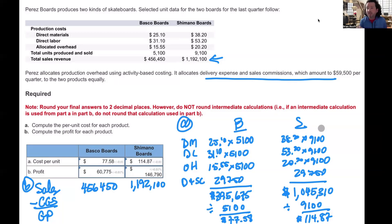Now I need to compute my cost of goods sold. Well, it says we produced and sold the same number of units: 5,100 of the Basco and 9,100 of the Shimano. So for cost of goods sold, I would simply take 5,100 for the Basco, multiply that times my cost of production, which was $77.58. And for the Shimano, I would take 9,100 and multiply that times $114.87. And when you do that, you should find profit for the Basco to be $60,775, and for the Shimano, $146,790.